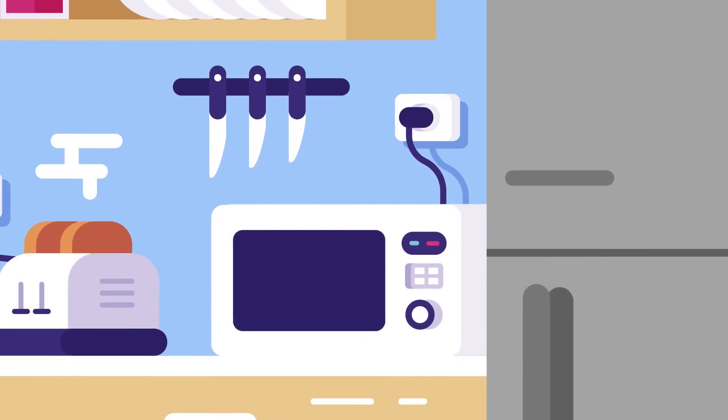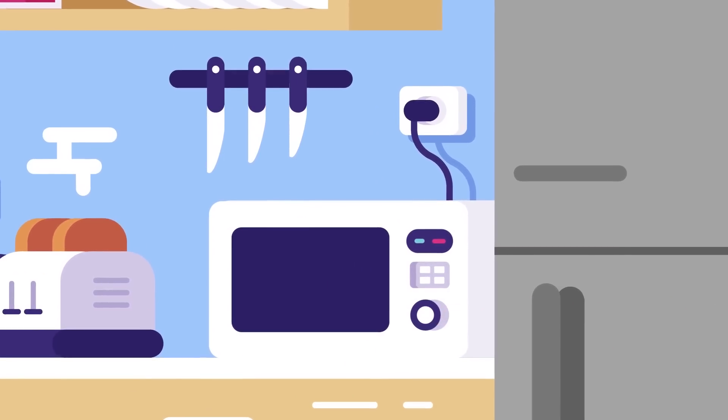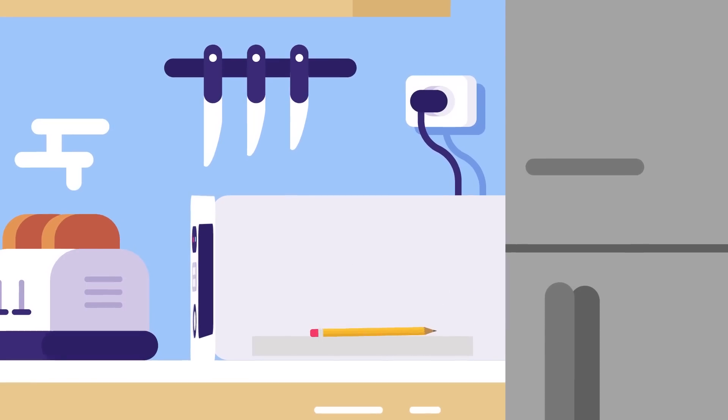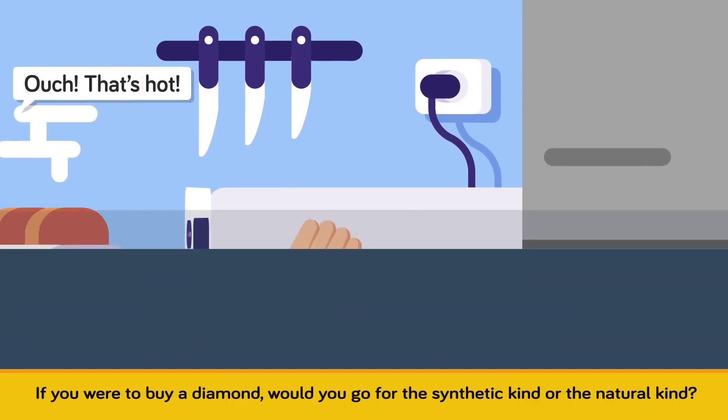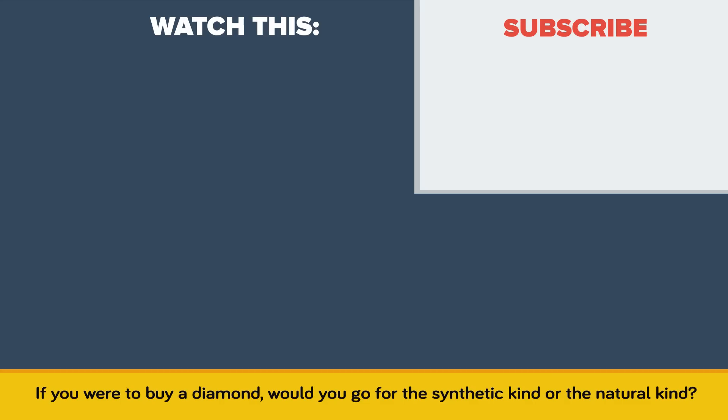So in conclusion, you can kind of turn pencils into diamonds if you manage to extract the pure graphite. But no recipe on the internet that involves using stuff you have in your house is the real deal. If you were to buy a diamond, would you go for the synthetic kind or the natural kind? Tell us in the comments!